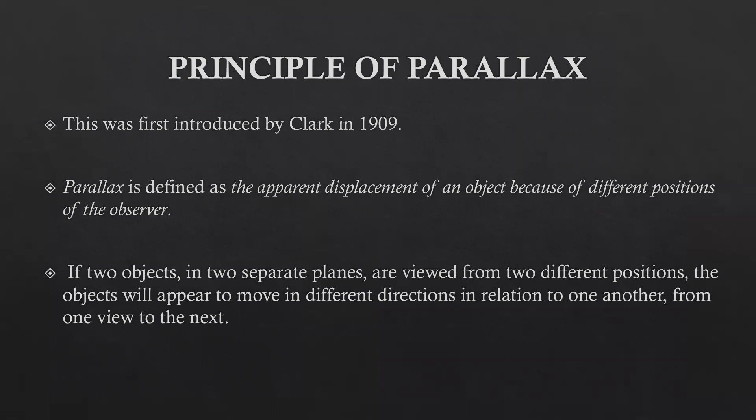The second method is Clark's rule and the buccal object rule, or the tube shift technique. It employs the principle of parallax. The principle of parallax was first introduced by Clark in 1909 and is defined as the apparent displacement of an object due to a different position of the observer. If two objects are placed in two separate planes and an observer views from two different positions, the objects will appear to move in different directions relative to one another.